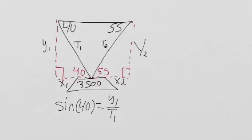So then if we want to solve for Y1, we just multiply by T1 on both sides. We get Y1 equals T1 times sine 40.